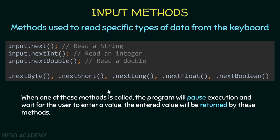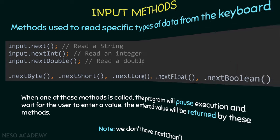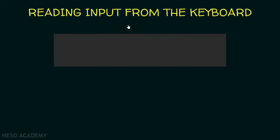When we call one of these methods, the program will pause execution and wait for the user to enter a value, and after that the entered value will be returned by the method. Note that there is no nextChar() — later on we will see how we can read a character from the keyboard.